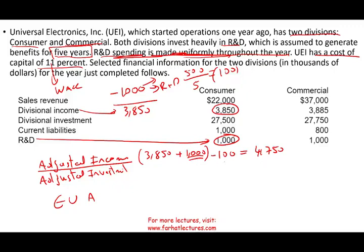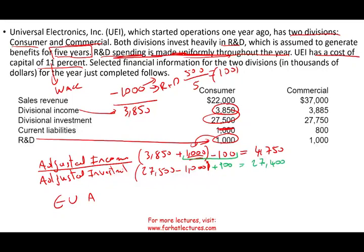For the adjusted investments, we start with $27,500 in division assets. We deduct $1,000 in current liabilities. Then, since we only expensed $100 of the R&D and the remaining $900 is now capitalized as an asset, we add $900 back. The adjusted invested capital is $27,500 − $1,000 + $900 = $27,400.